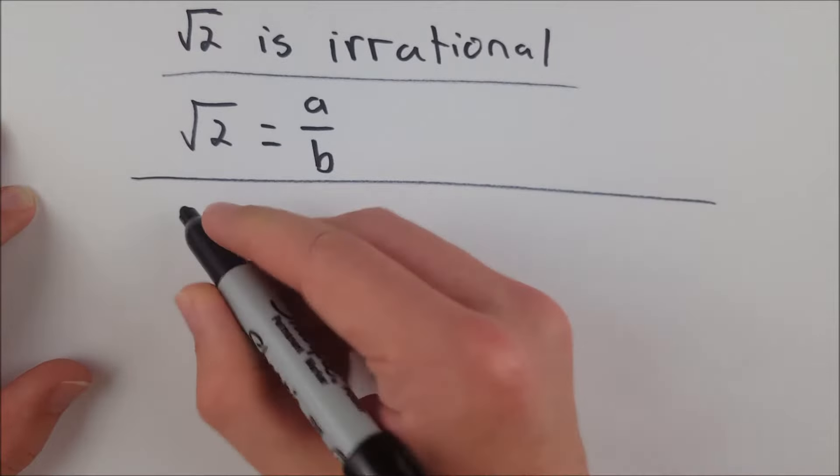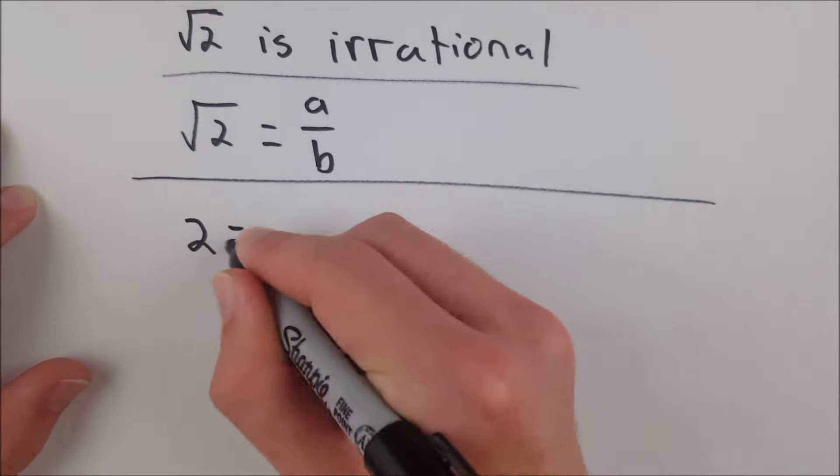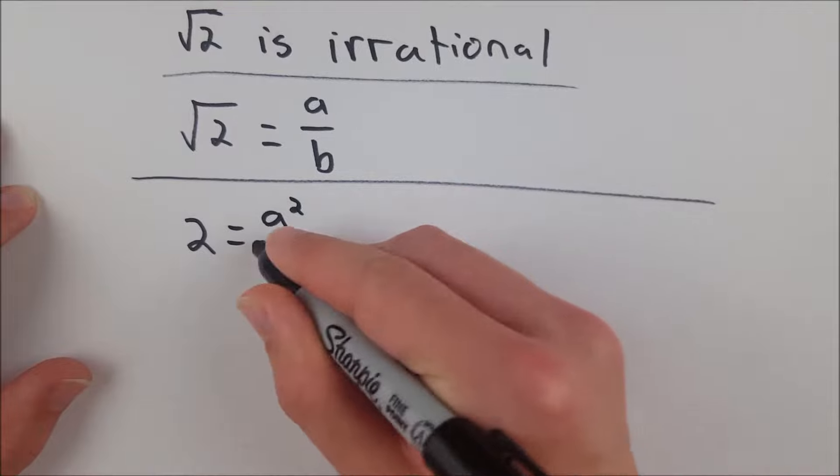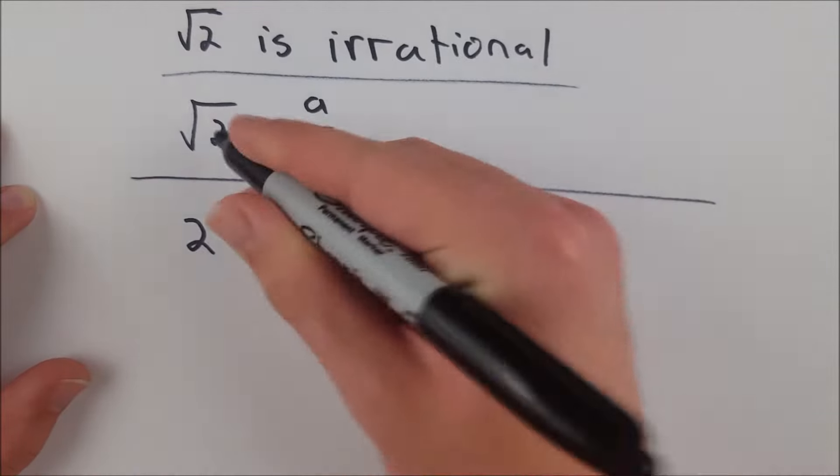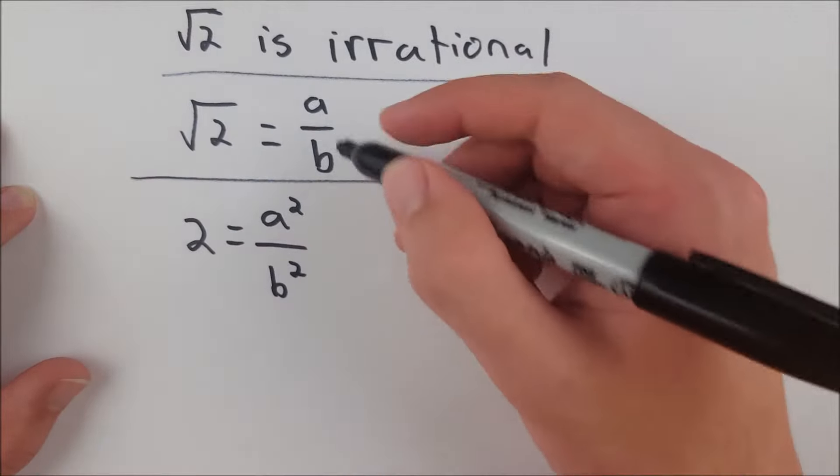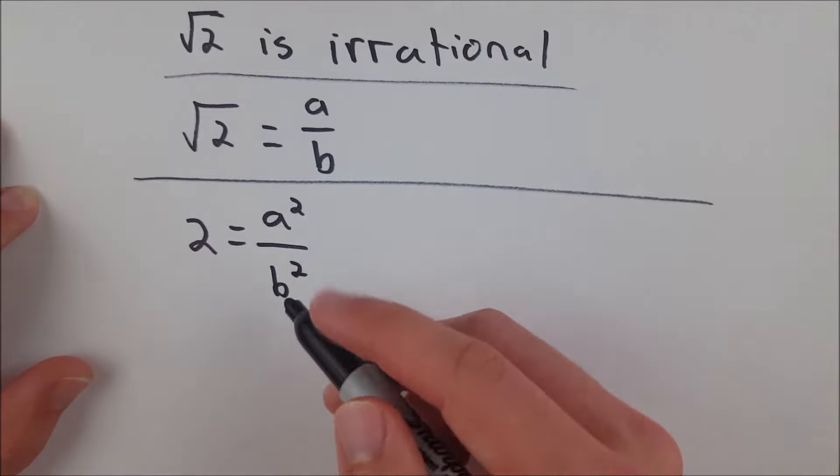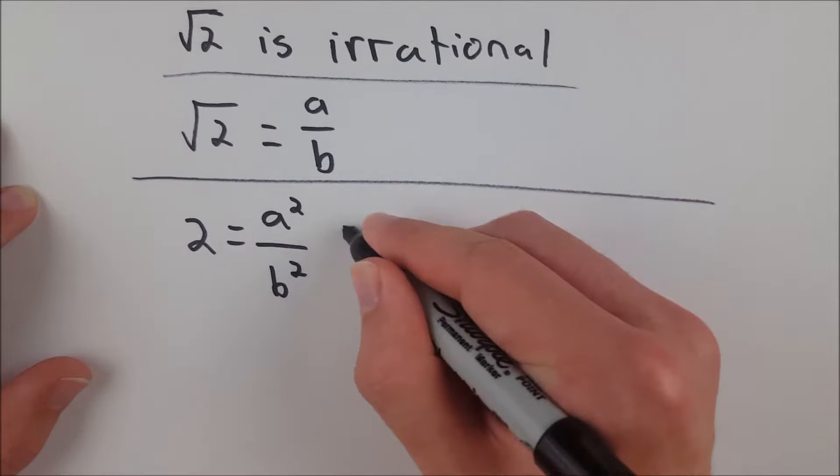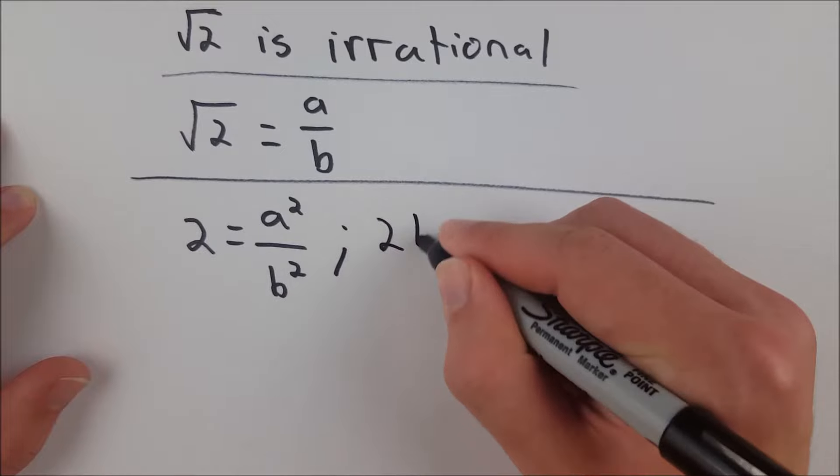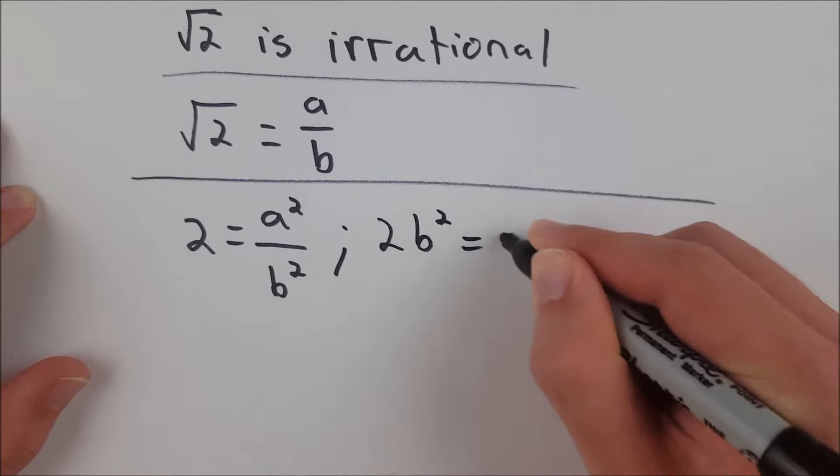We'll take this equation and square both sides. So 2 is equal to a squared over b squared. All we did was square both sides—root 2 squared is 2, a over b squared is a squared over b squared. Now we'll multiply both sides by b squared and that gives us 2b squared equals a squared.